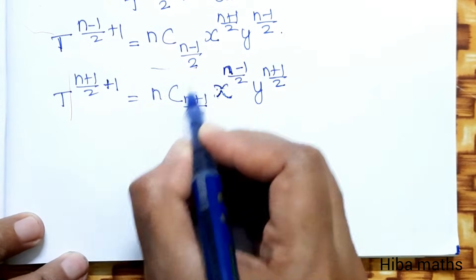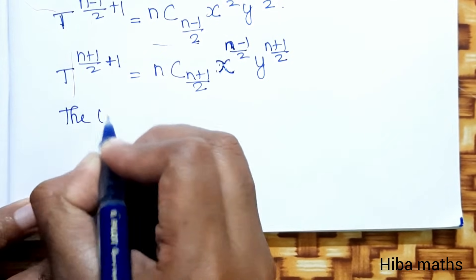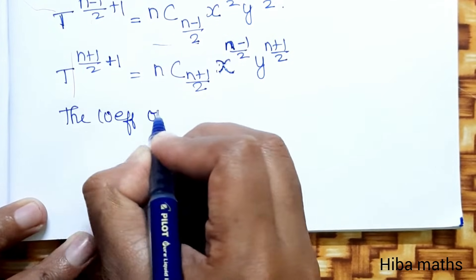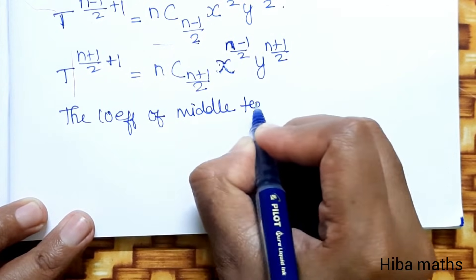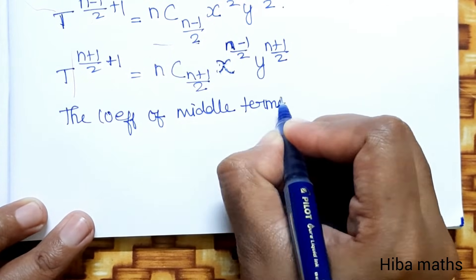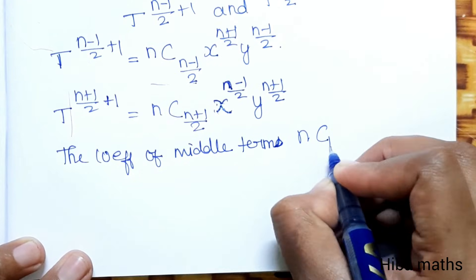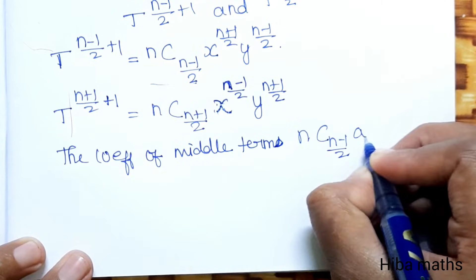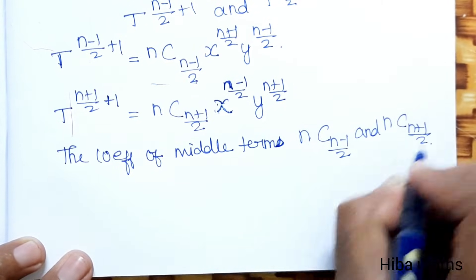Now we need to prove that the coefficients of the middle terms are equal. Correct?